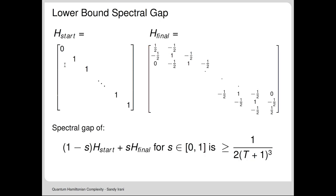Here are the two Hamiltonians. H_start is expressed in the standard basis—all ones along the diagonal with only the all-zero state having eigenvalue zero. H_final is the propagation Hamiltonian. Using the same geometric lemma from last time about the angle between two spaces, we can show that for any s in [0,1], the spectral gap is exactly 1 over T cubed. This means we can use adiabatic computation to create this history state, and with a polynomial number of repetitions, get the correct output of the circuit.